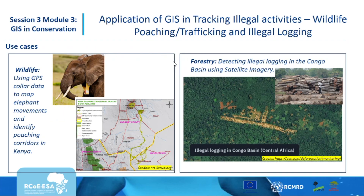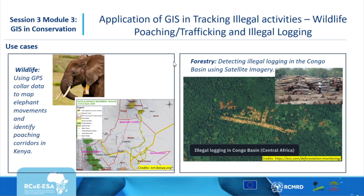Looking at use cases, information systems have been used to track wildlife using collars placed on animals including elephants to monitor their movement in real time. This is key to ensuring these animals are safe, and whenever movement stops or the collar is interfered with, you can easily detect that something has happened to the tagged animal.